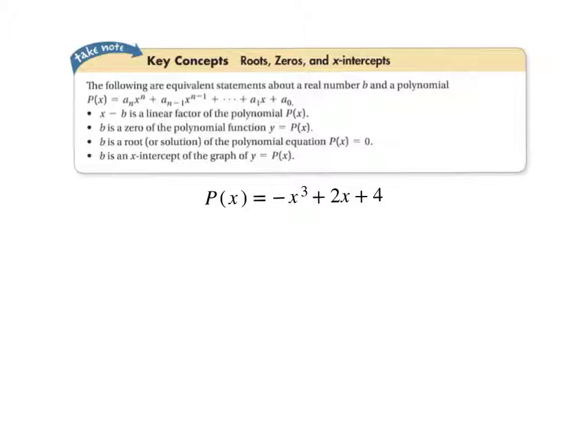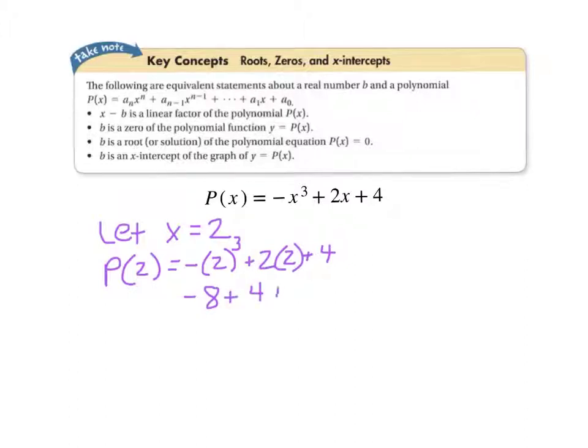Okay, so let's talk about this particular function that you see on the screen. Let P(x) equal the opposite of x cubed, so negative x cubed plus 2x plus 4. And let's let x equal 2. If that's the case, let's find P(2). So that would be the opposite of 2 cubed plus 2 times 2 plus 4. So 2 cubed is 8, so negative 8 plus 4 plus 4, which comes out to 0.